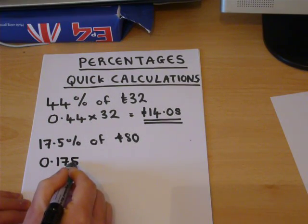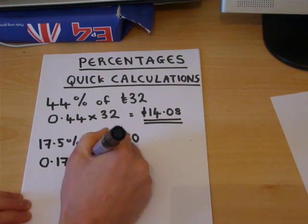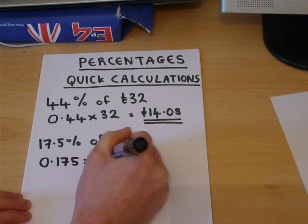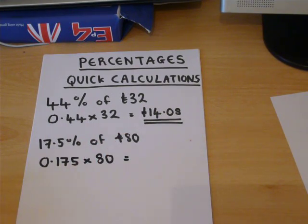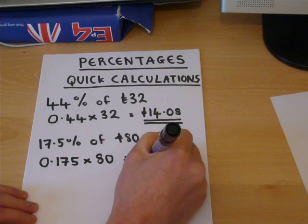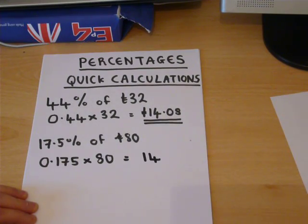Of, which is times by, on a calculator, 0.175 times by 80 gives us 14 pounds.